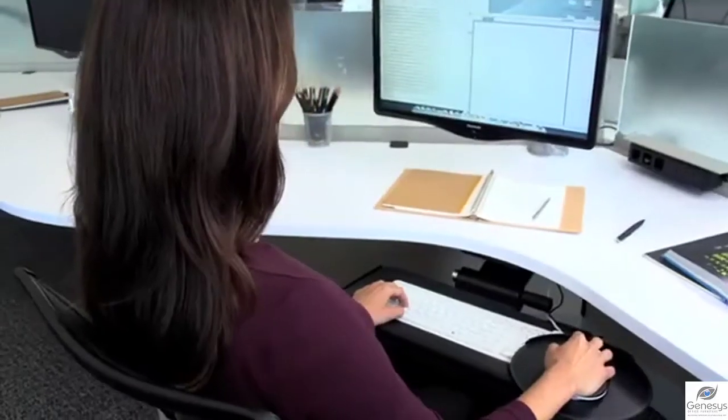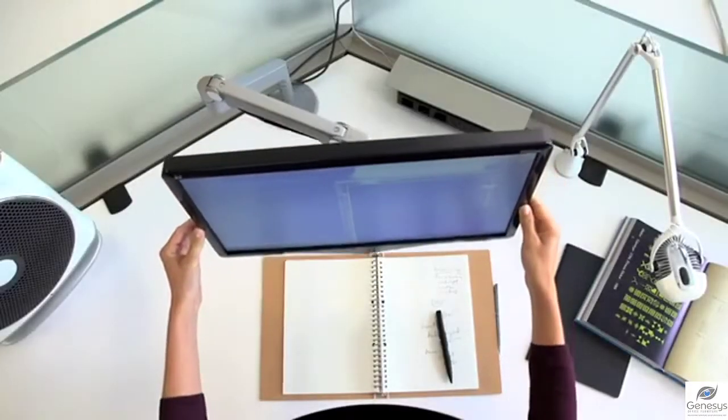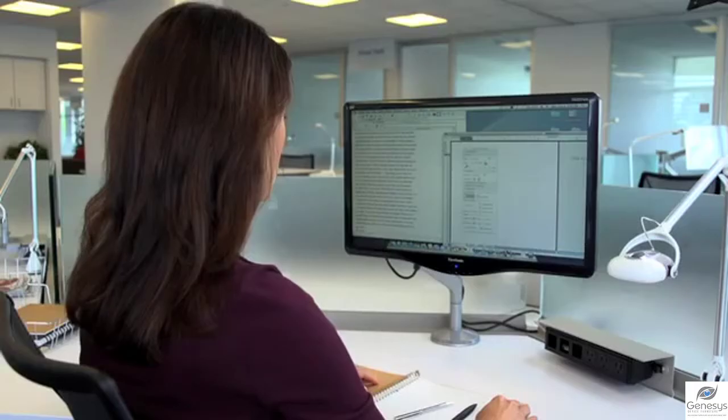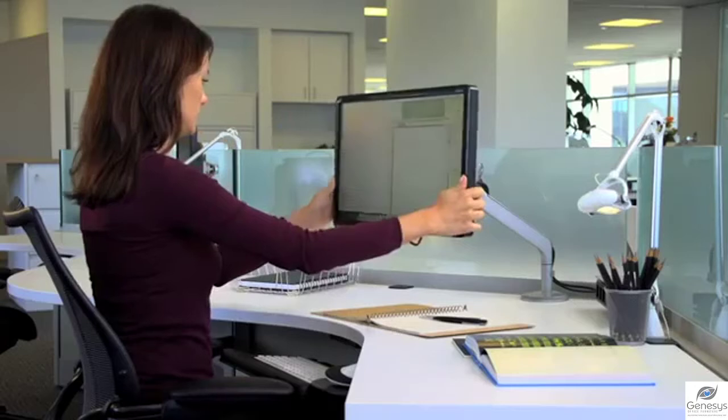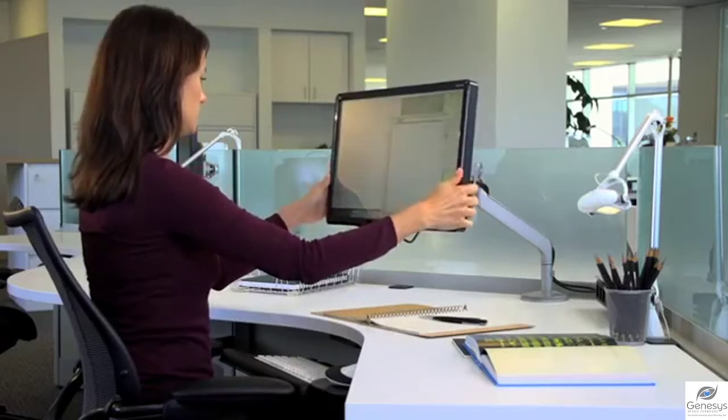For optimum viewing, a monitor should be positioned an arm's length away with the top line of text at or below eye level. Tilt the top of the monitor away from you slightly until your line of sight is perpendicular to the monitor.